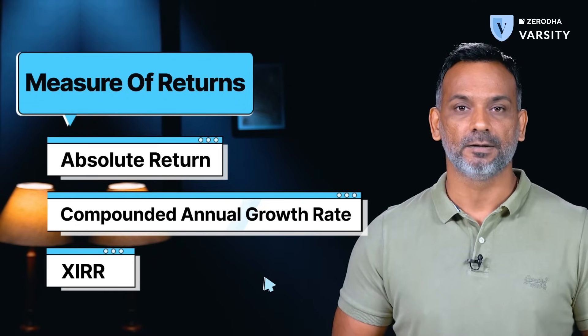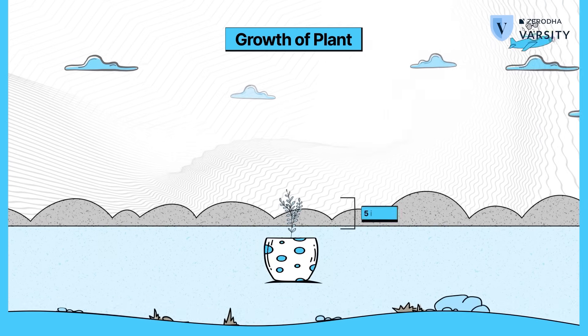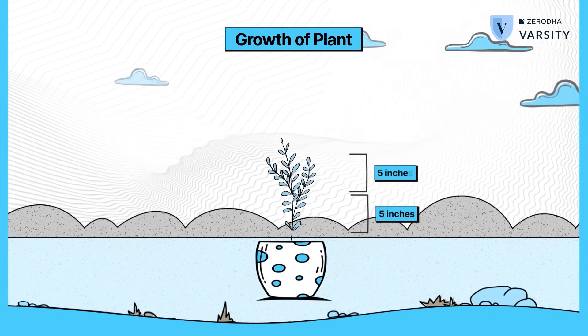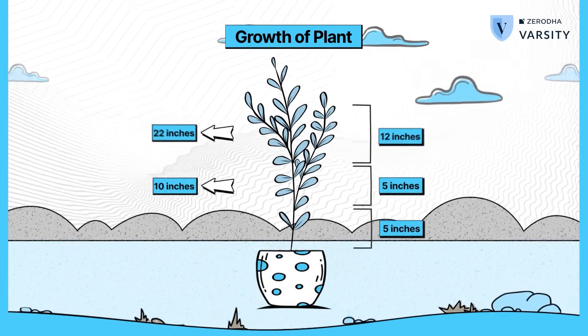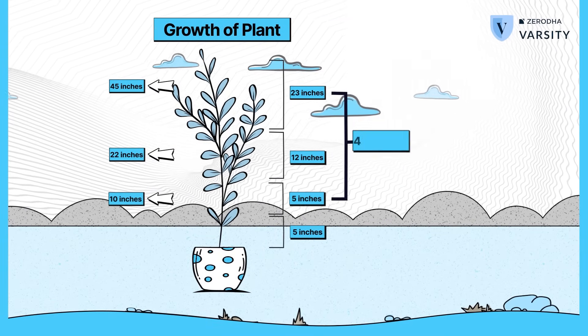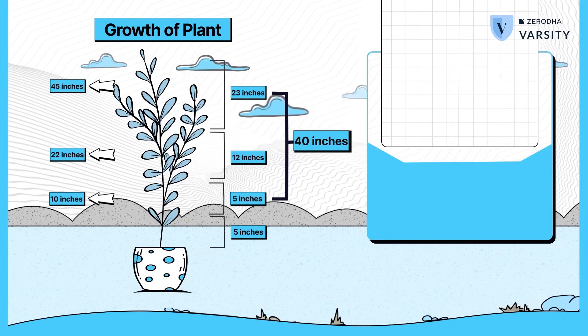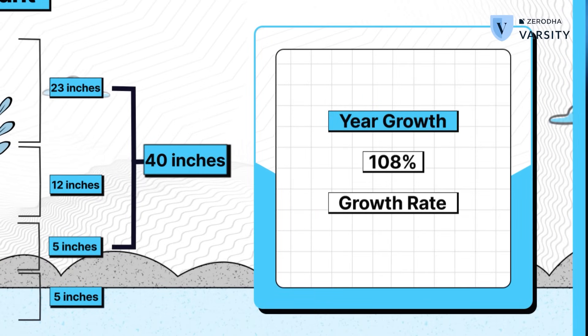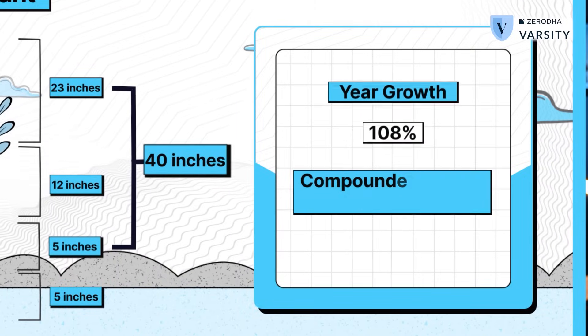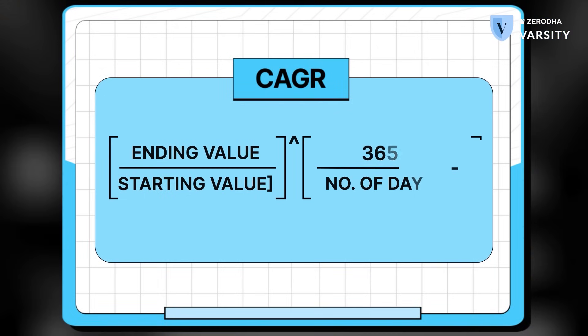This is where the second metric comes into play, which is called the Compounded Annual Growth Rate, or CAGR. To put this in perspective, assume you get a 5-inch sapling from a nursery and plant it in your house. In the first year the plant grows to 10 inches, the second year to 22 inches, and in the third year to 45 inches. The absolute growth is 40 inches over three years, but the rate at which it has grown is 108%. The formula used to calculate 108% is the CAGR formula. CAGR is the growth rate, and most mutual funds publish the CAGR value, so ignore the formula if it looks too complex — but it is super important that you understand what CAGR is and how to interpret it.